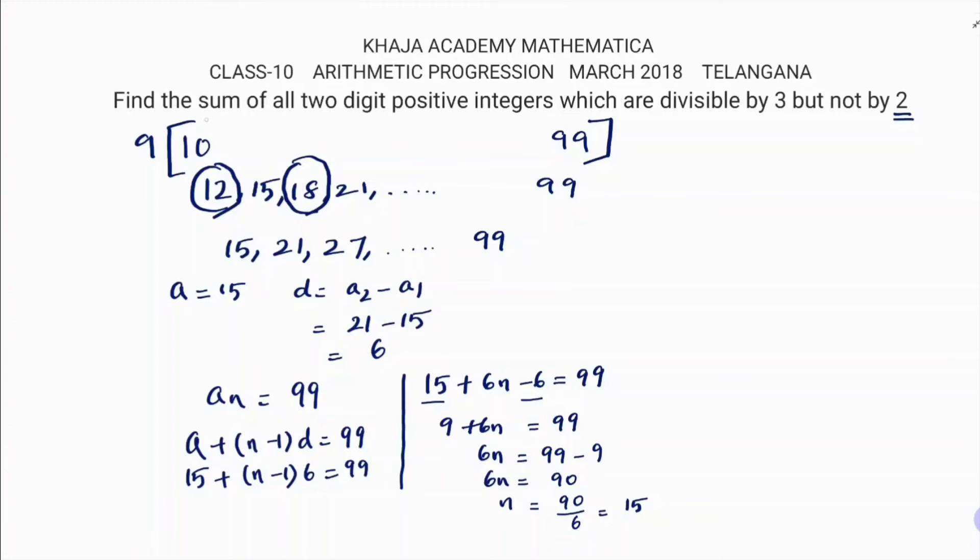Now they are asking find the sum of all two-digit numbers. So Sₙ - since you know the last term and first term also, as you know the last term you can use the second formula: n/2 times (a plus l). So total 15 terms are there. 15/2 times (15 plus 99). 15 plus 99.